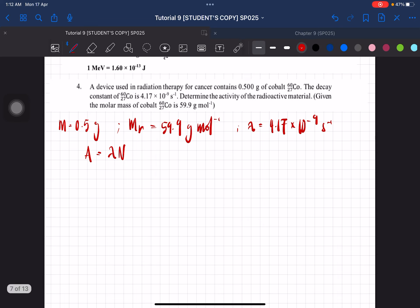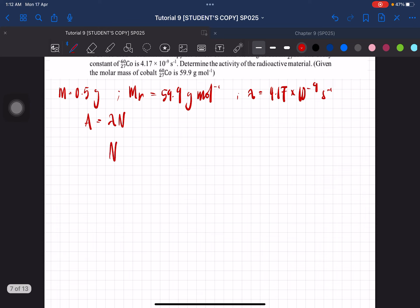Since you've learned chemistry, you know that in order for us to calculate the number of molecules, we have to times the mass of the element over the molar mass times with the Avogadro's constant.